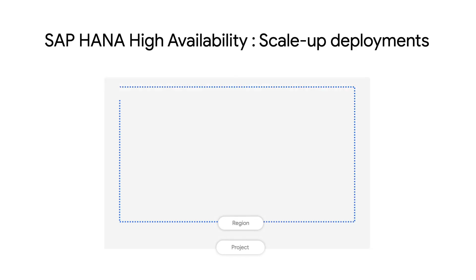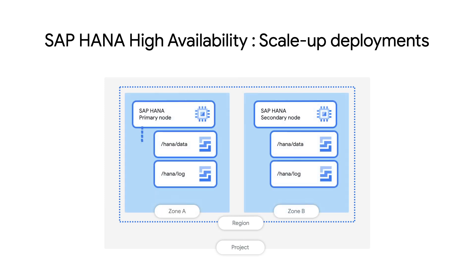When it comes to running SAP HANA databases in a high-availability setup, the first mechanism that comes to mind is the built-in HANA system replication. SAP provides this functionality out of the box and offers a number of replication modes so you can tweak it to match your requirements. For synchronous replication, SAP recommends network latency below one millisecond between the primary and secondary database. This means you can deploy your two HANA instances in two different zones in any of our regions and protect your system against the failure of one zone, while still meeting requirements for synchronous replication.